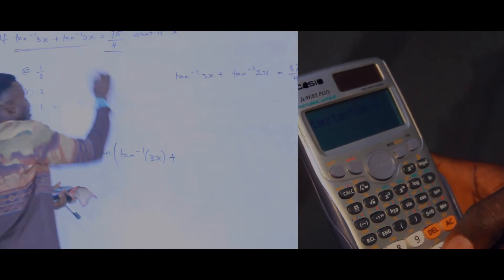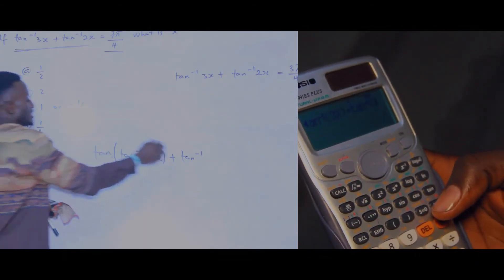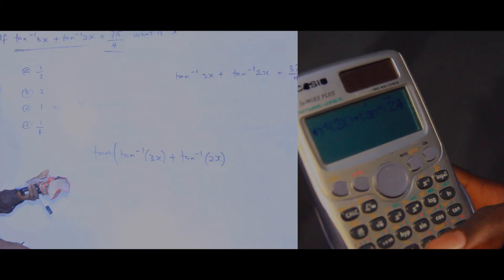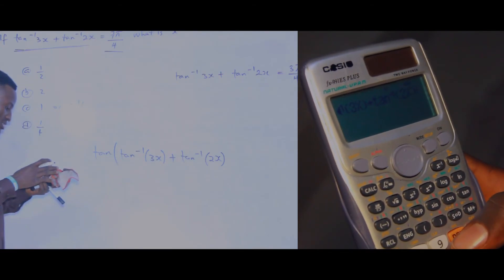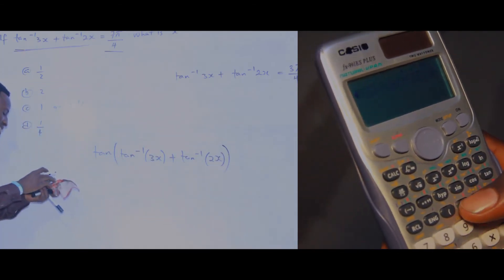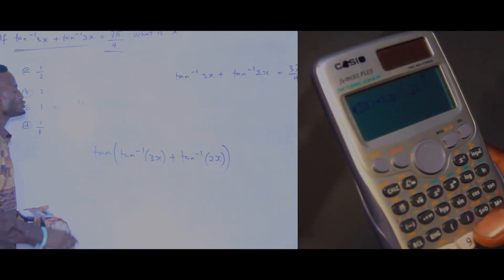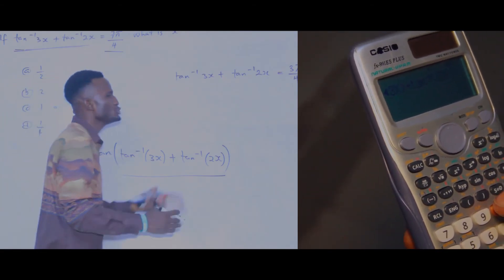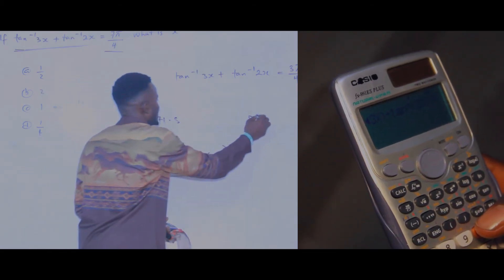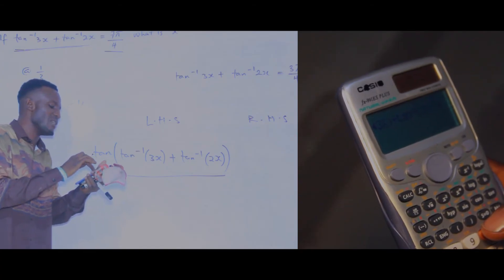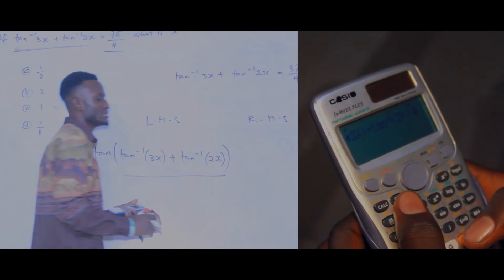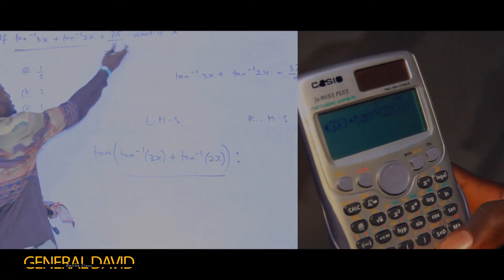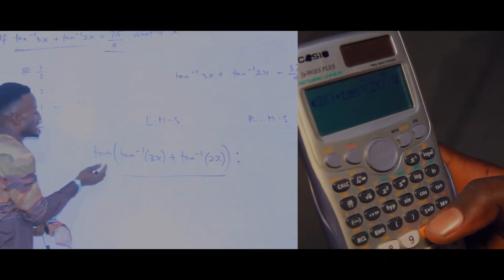When you close that bracket, you then close the general bracket — that is the bracket of the outer tan you opened. Now what I want to do is make sure the option that gives the left side value equal to the right side value is the answer. I will use the left-hand side equals right-hand side law. Press alpha and the button that is under the alpha — it will give you two dots, the equivalence symbol. Then let us insert the right side.